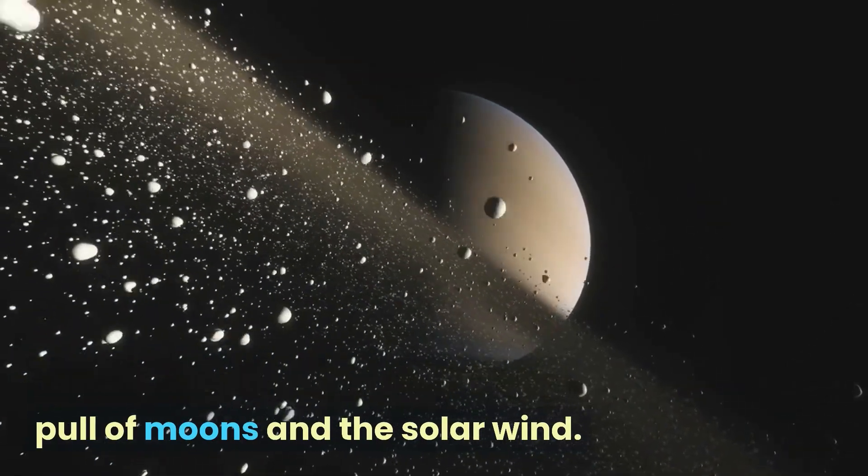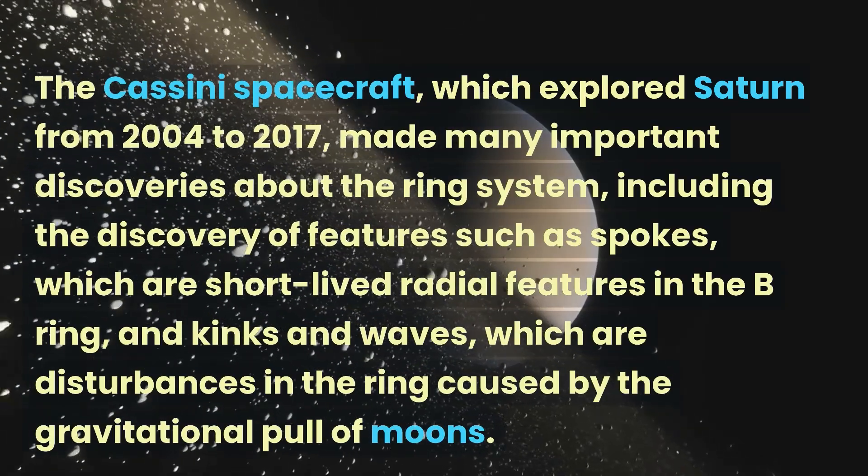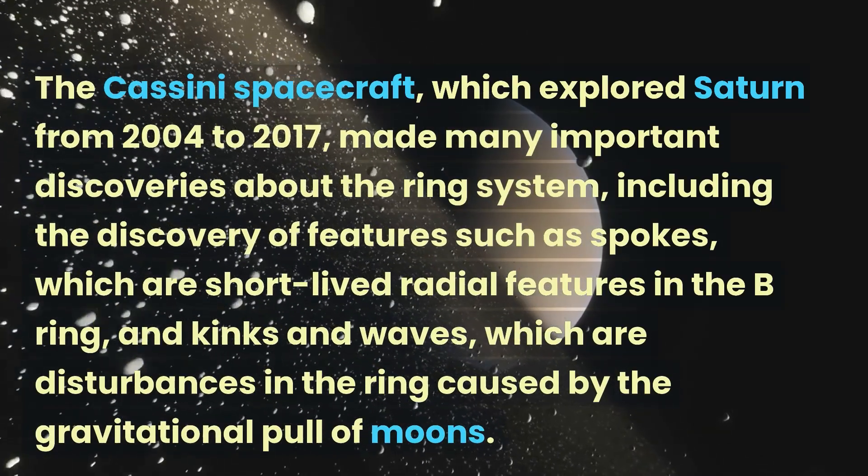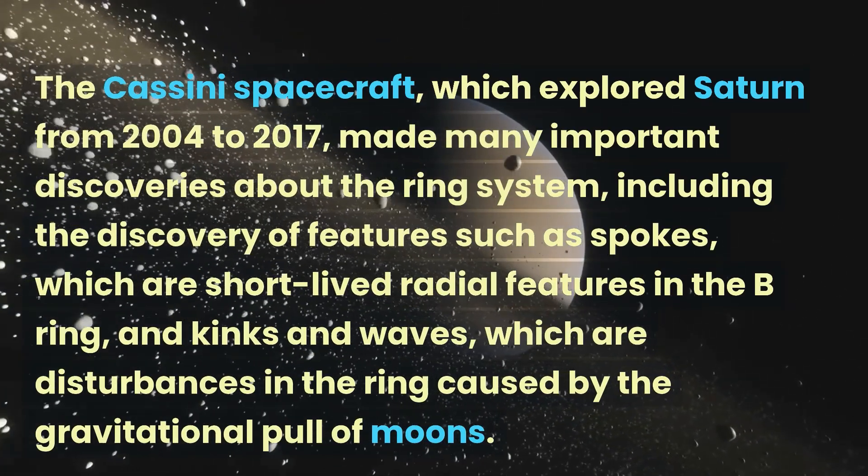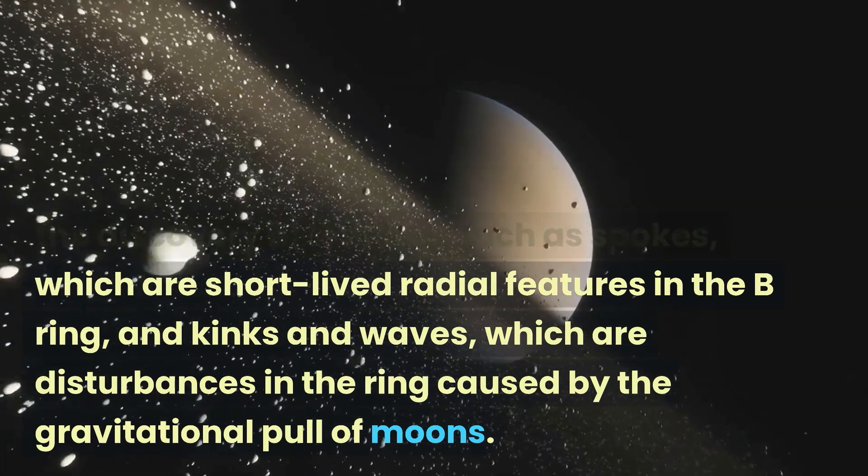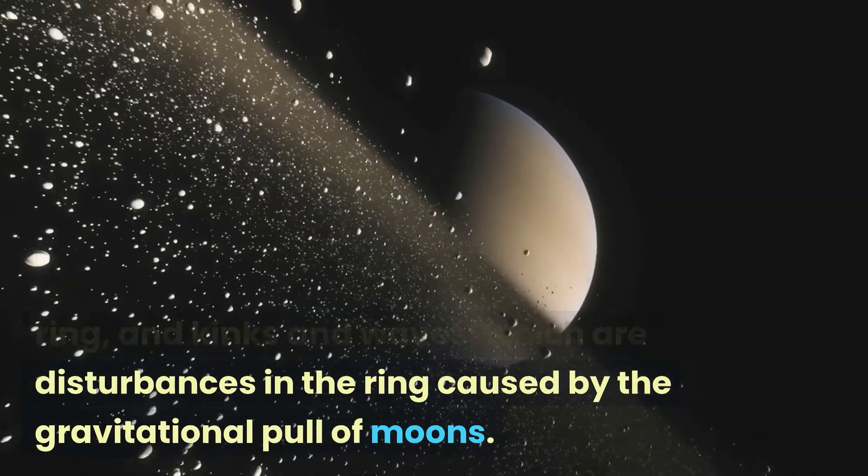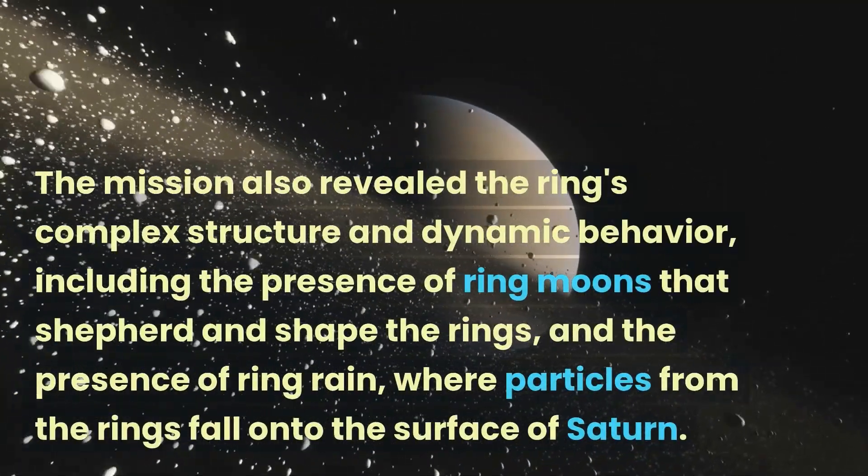The Cassini spacecraft, which explored Saturn from 2004 to 2017, made many important discoveries about the ring system, including the discovery of features such as spokes, which are short-lived radial features in the B ring, and kinks and waves, which are disturbances in the ring caused by the gravitational pull of moons.